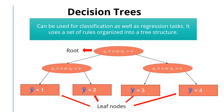Here, xi represents one feature in the input vector and v is a single value. We can use the tree to classify an input. We start from the root at the top and at each node we travel to one of its children based on the rule results. We continue this until we reach a leaf at the bottom. Each leaf node is associated with a class which determines the output of the classification task.